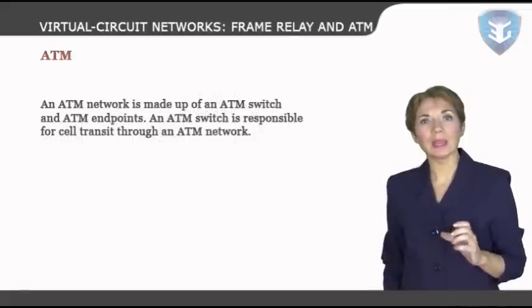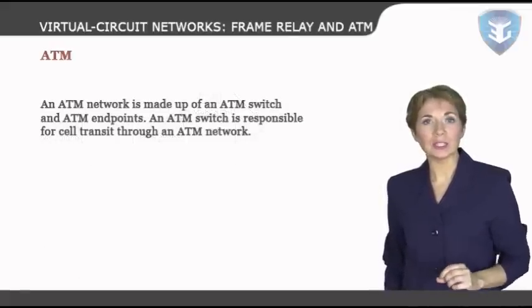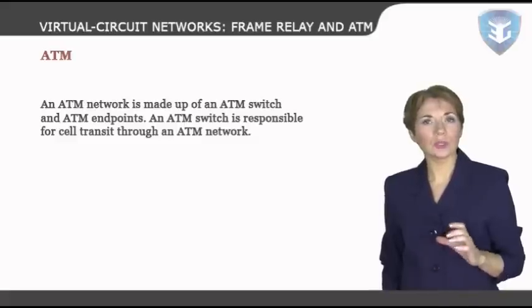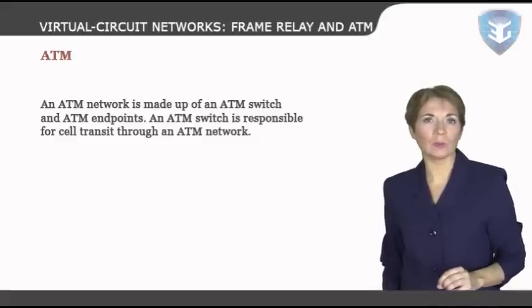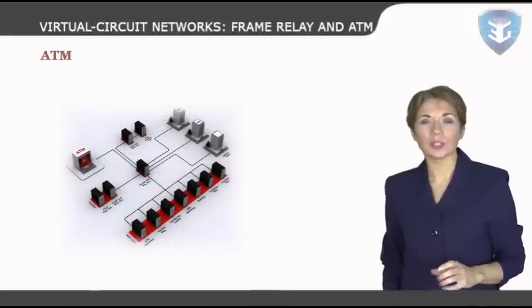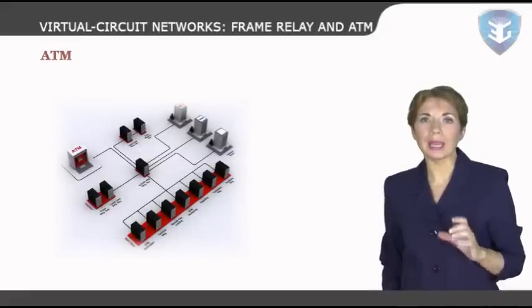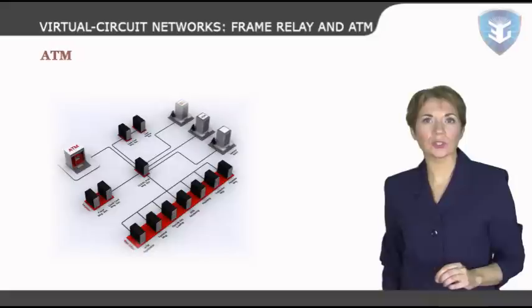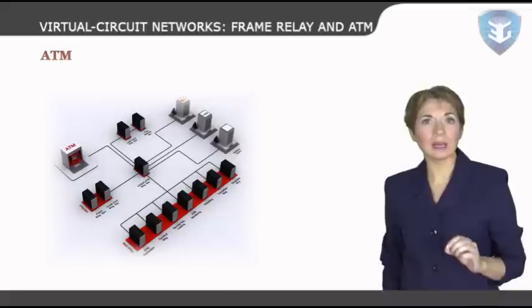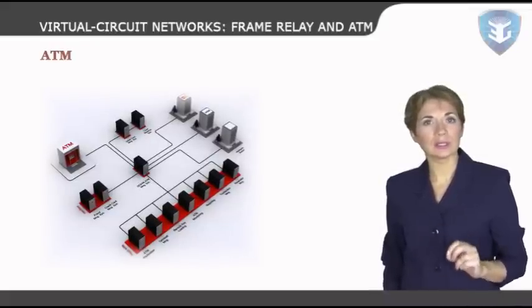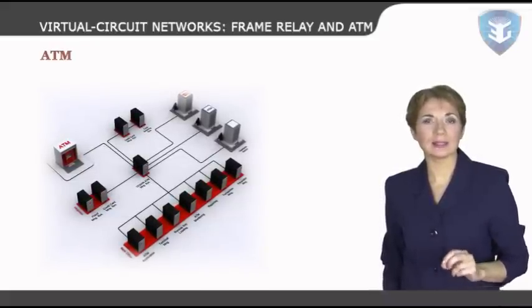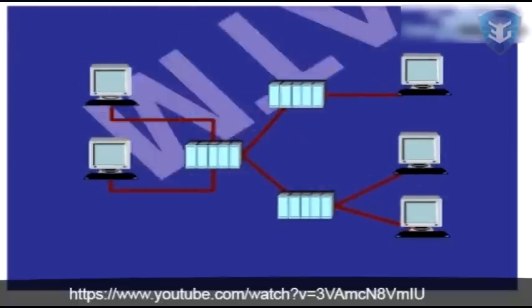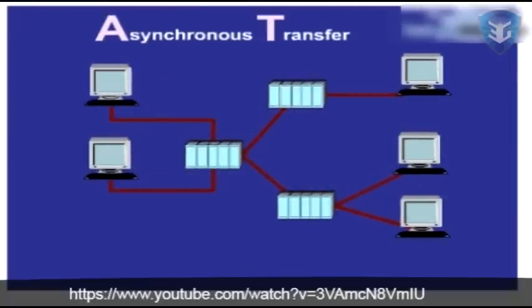An ATM network is made up of an ATM switch and ATM endpoints. An ATM switch is responsible for cell transit through an ATM network. It accepts the incoming cell from an ATM endpoint or another ATM switch, then reads and updates the cell header information, and quickly switches the cell to an output interface toward its destination. ATM is also a packet switching technology, just like frame relay, but in contrast to frame relay, it transmits packets with a fixed length.